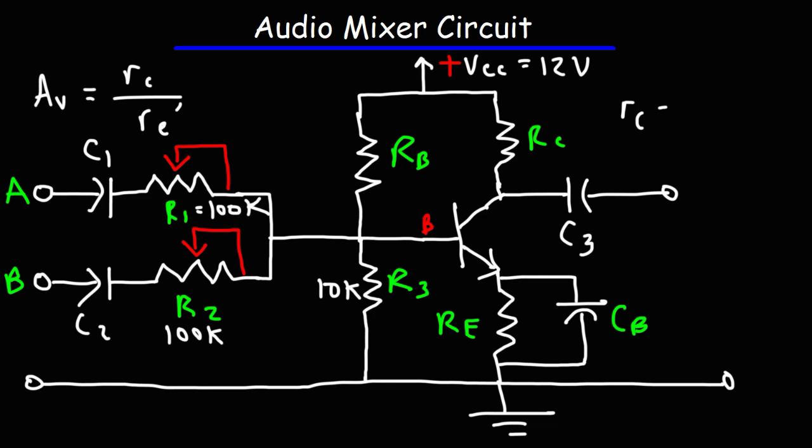Lowercase rc is equivalent to the parallel combination of the collector resistance and the load resistance, the load resistance being the resistance of the output circuit. So the parallel combination between those two will give us lowercase rc, which affects the voltage gain.